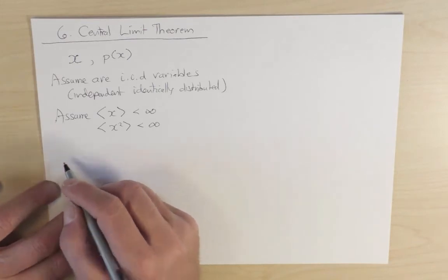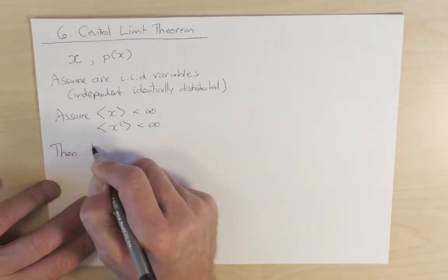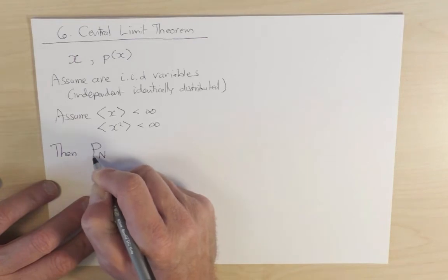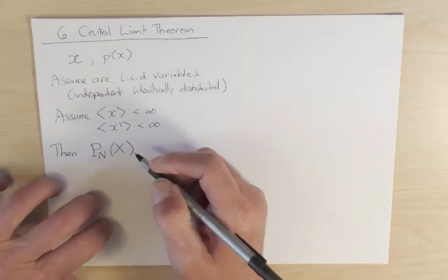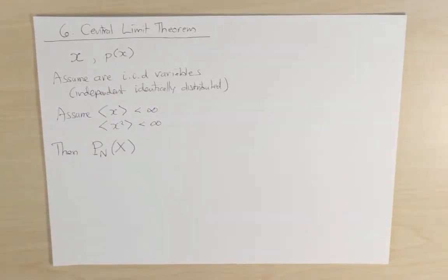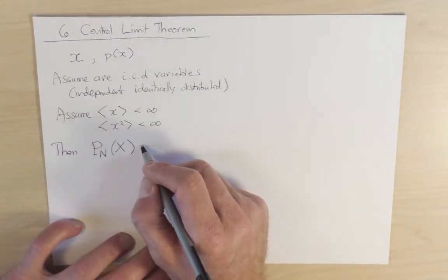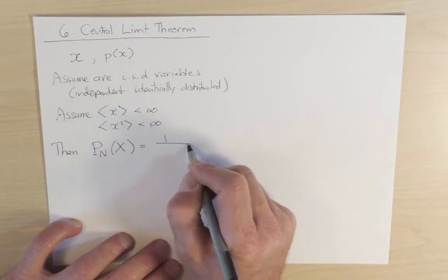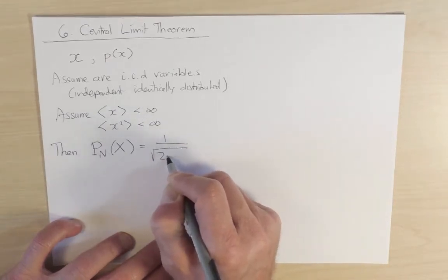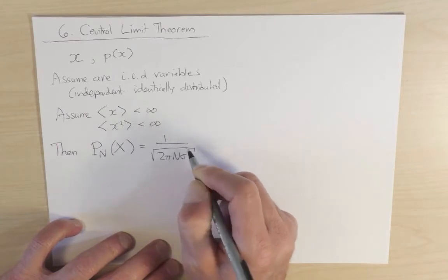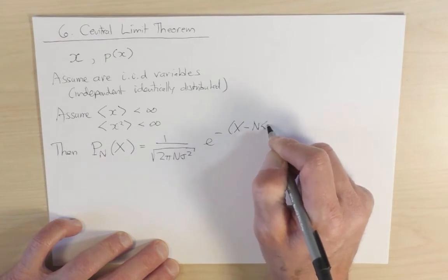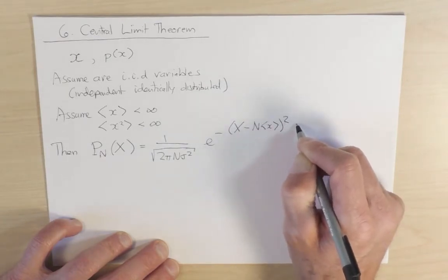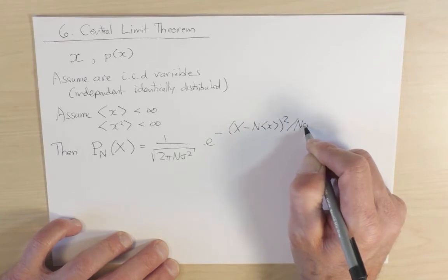Under these conditions, then the probability distribution after n steps, so capital P of n after n steps of the total displacements, so here big X is the sum of the displacements little x, n of these guys, then this probability distribution of the total displacements is equal to 1 over square root of 2 pi n sigma squared, e to the minus x minus n times the average of little x squared, divided by 2 n sigma squared.